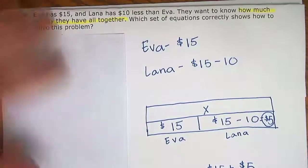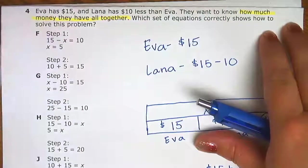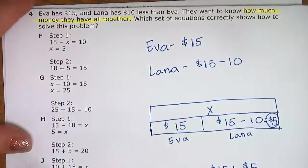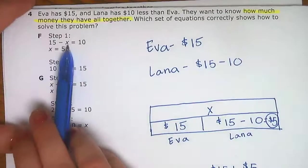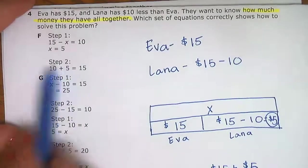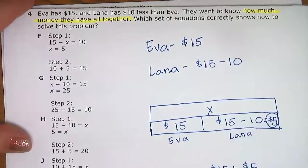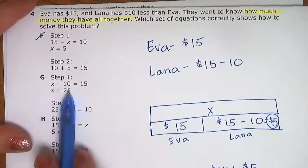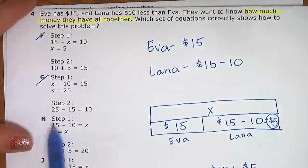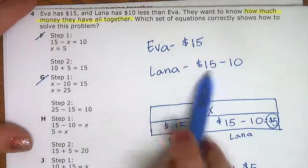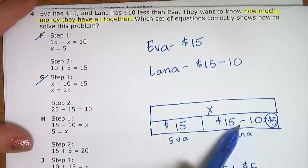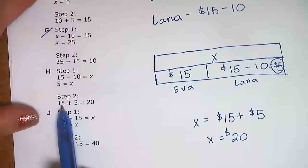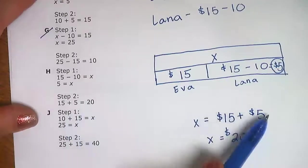Now let's see which equation matches what we did. For step one, we had to do 15 minus 10 in order to find what Lana had. One answer choice says 15 minus something equals 10, and that something is 5. Well, Lana does have $5, but that's not quite how we got it. Another choice has step two as X minus 10, but we didn't start with the total. Looking at choice H: step one is 15 minus 10 to find what Lana had — that's what we did first, and the amount Lana had was $5. Then step two puts Eva's 15 plus Lana's 5 to get 20. So it looks like H might be the best choice.